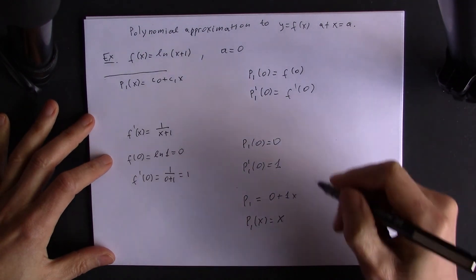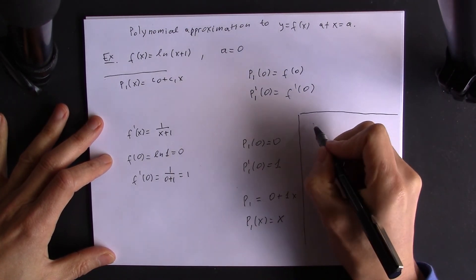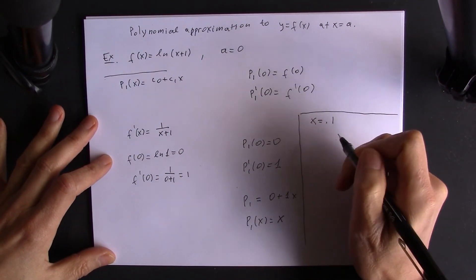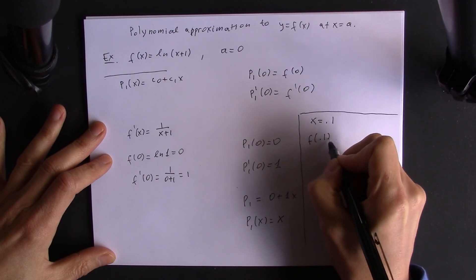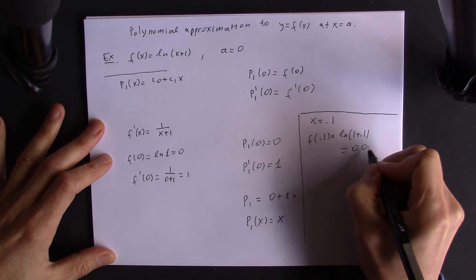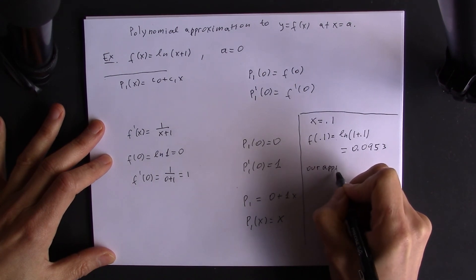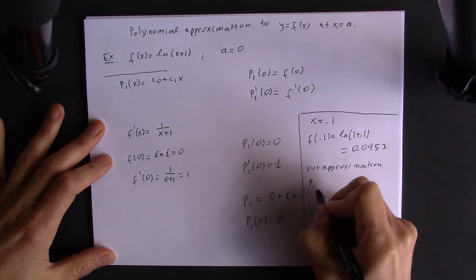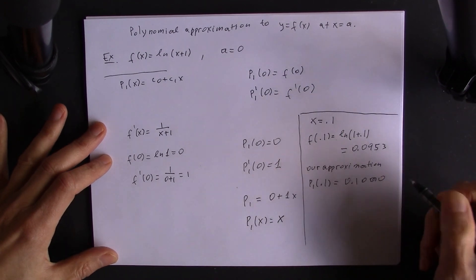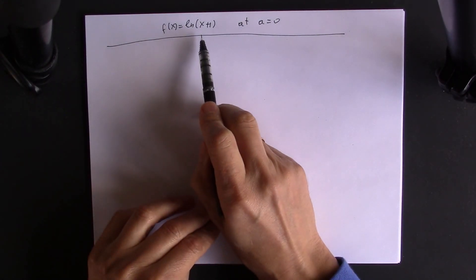Now we want to see how good our approximation is. Choosing a point nearby, say x equals 0.1, which is close to a equals 0: f(0.1) equals ln(1.1) which is 0.0953. Our linear approximation p1(0.1) is equal to 0.1000, so it is pretty accurate. So far we have found the straight line approximation to f(x) equals ln(x+1) at a equals 0.